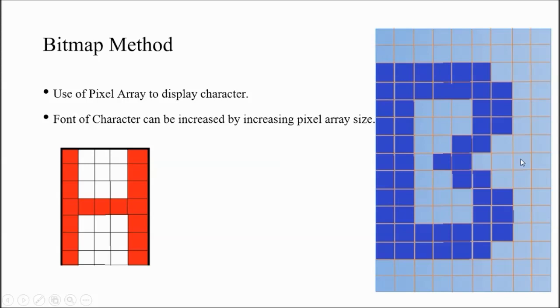The first method of character generation is bitmap method. In bitmap method, you use a pixel array to display the character. Here you can see this array is 7 by 5. The H letter is displayed where there is a path of H - those pixels are displayed and remaining pixels are not displayed, so we can perceive that as the letter H.